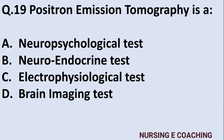Question 19: Positron emission tomography (PET) is a — Option A: neuropsychological test, Option B: neuroendocrine test, Option C: electrophysiological test, Option D: brain imaging test. Answer is D — brain imaging test.